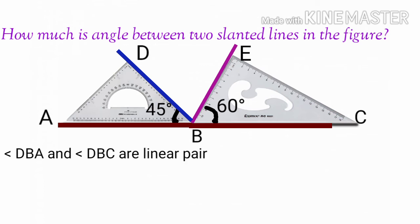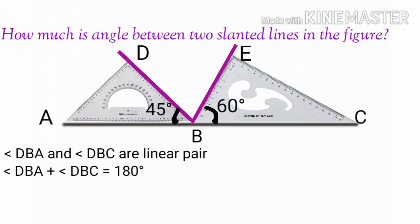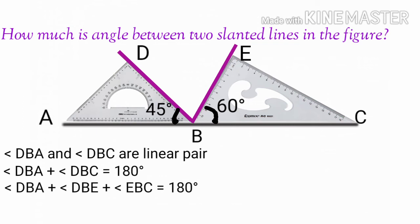Angle DBA and angle DBC are a linear pair. So angle DBA plus angle DBC is equal to 180 degrees. Angle DBA is equal to 45 degrees. Therefore, 60 degrees plus 45 degrees is 105 degrees.